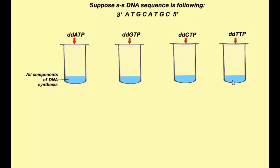In this diagram you can see we have taken 4 tubes, and in all 4 tubes all the components of DNA synthesis have been added, including the single-stranded DNA. Here suppose we say the single-stranded DNA sequence is ATGCATGC. Here I have taken a very simple nucleotide sequence, but you can take any nucleotide sequence. In all these tubes the ddNTPs have been added. In the first tube ddATP was added, ddGTP in the second tube, ddCTP and ddTTP in the third and fourth.